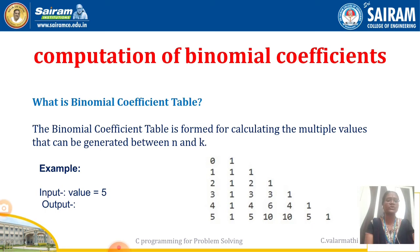The next program is computation of binomial coefficients. The binomial coefficient table is formed for calculating the multiple values that can be generated between n and k. It will calculate the binomial values from n to k. For example, if the input value is 5, you can see the binomial table on the right side, starting from 0, 1, 1, 1, 1, 2, 1, 1, 2 — like that, it will show the full binomial coefficient table, which is purely related to the mathematical table.